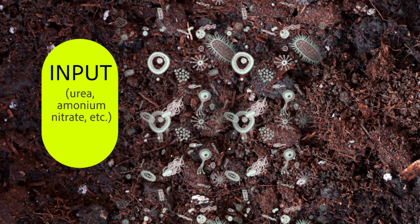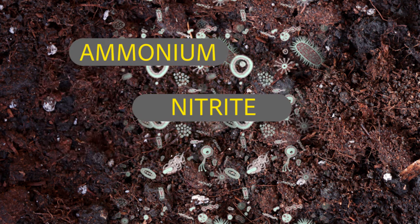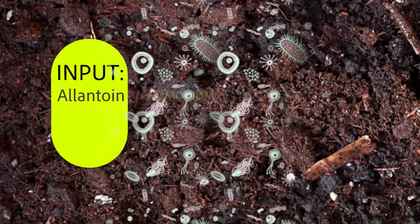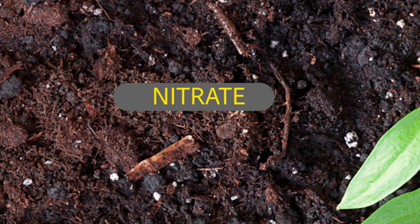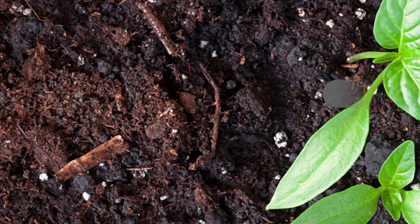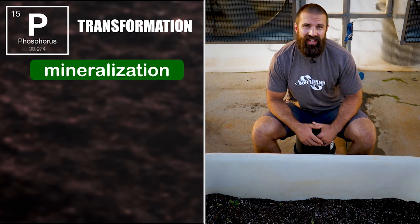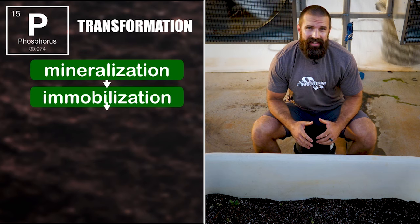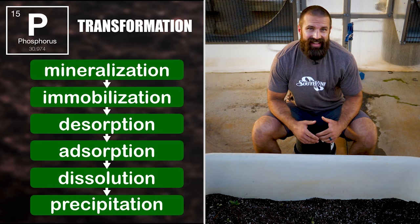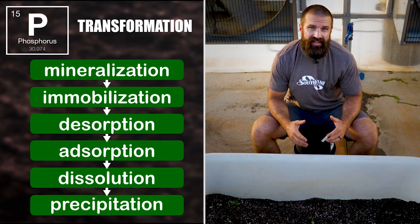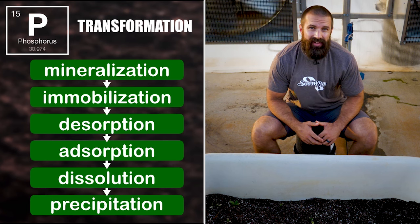The microbes process inputs into ammonium, nitrite, and nitrate. Even chicken litter, which is 80% uric acid, is converted into a chemical called allantoin, then into ammonium, nitrite, and nitrate. It's not until the nitrate stage that the product is usable to the plant. Phosphorus undergoes mineralization, immobilization, desorption, adsorption, dissolution, and precipitation. The point is that these transformations must occur, otherwise your soil is dead — and so is your grass.